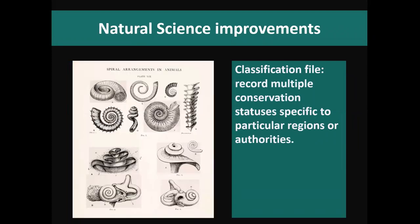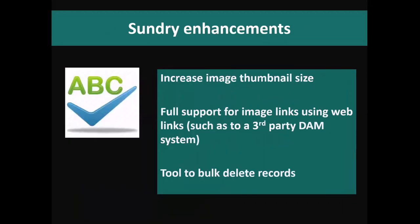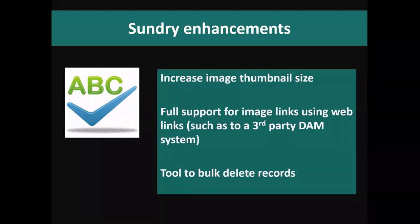There are minor changes for natural sciences on the classification file, allowing people to record multiple conservation statuses specific to an area of geography rather than worldwide. As part of the upgrade to Open Insight 10, we'll be looking at whether we can change the thumbnail size to make it more visible on the larger screens people are primarily using now. We also need to fully support links to images via web links as people start to use third-party systems like DAMS to store source files. Lastly, we've had more requests to bulk delete records, so we're seeing whether there's a way to provide that as a generic option — currently it's only possible through System Monitor.